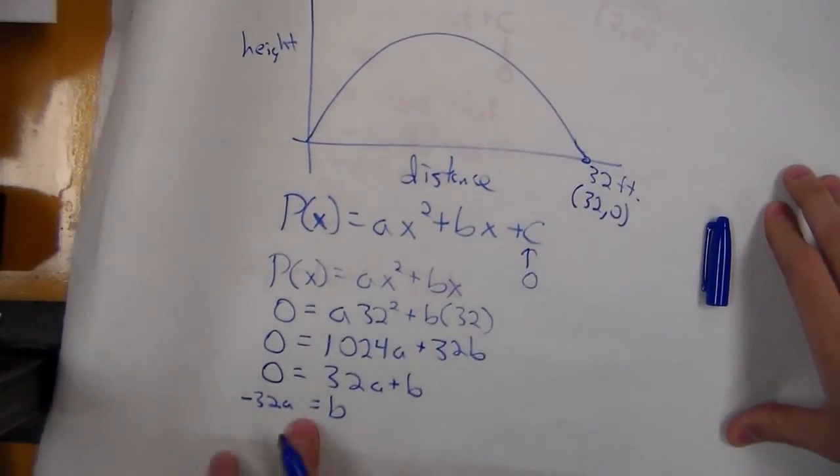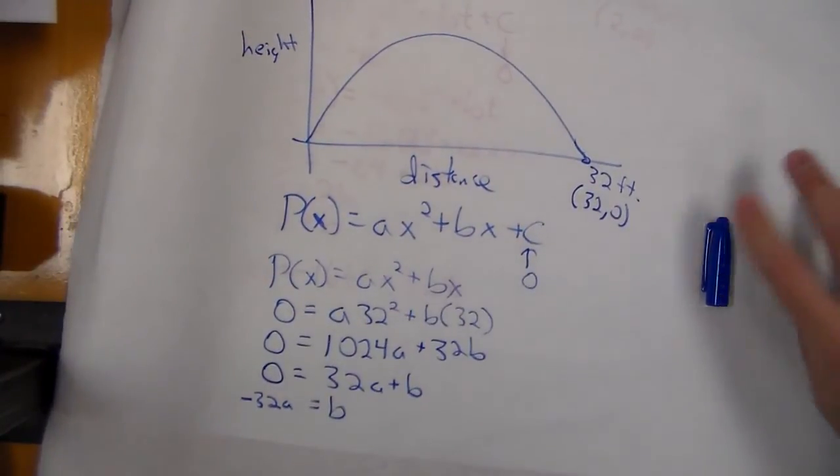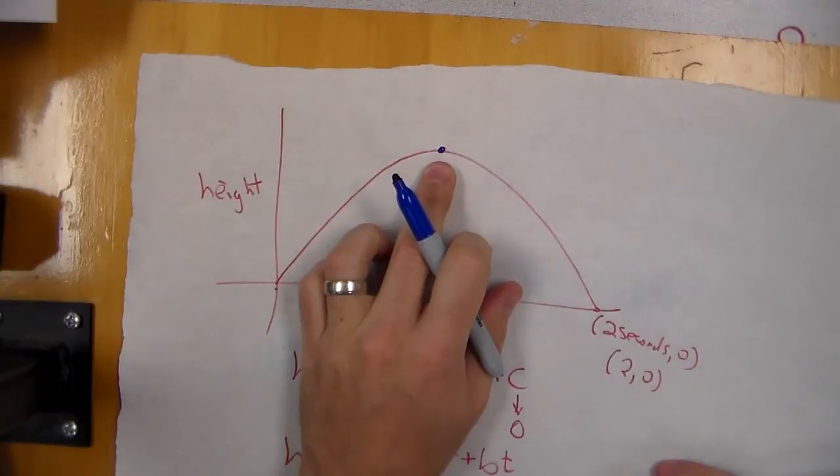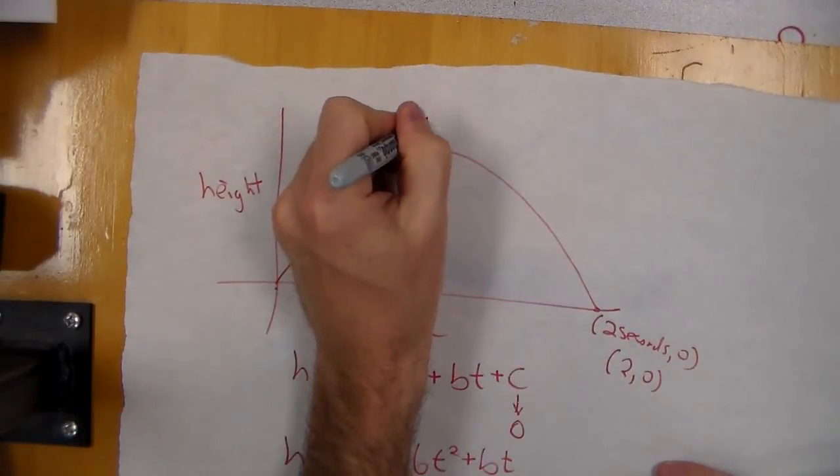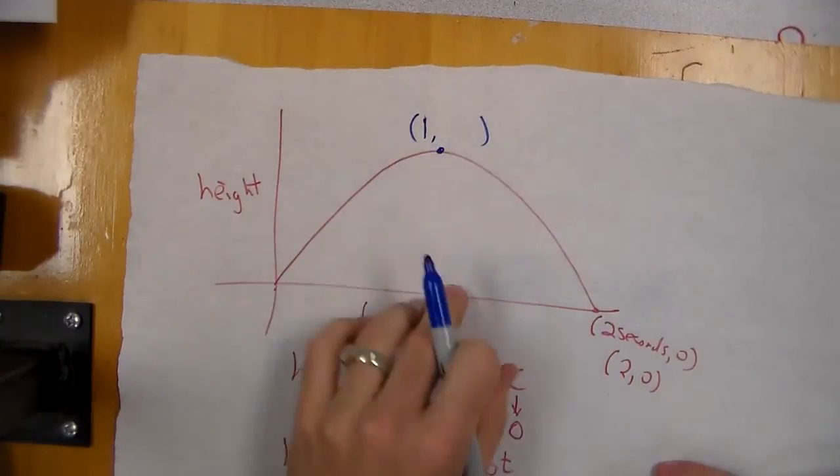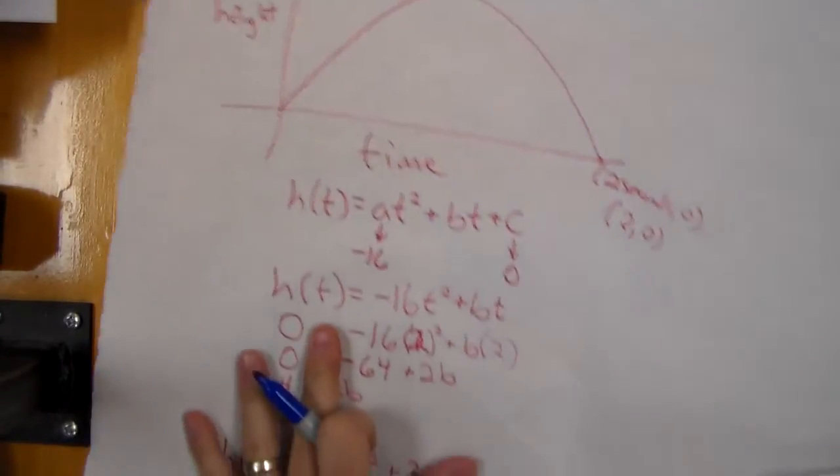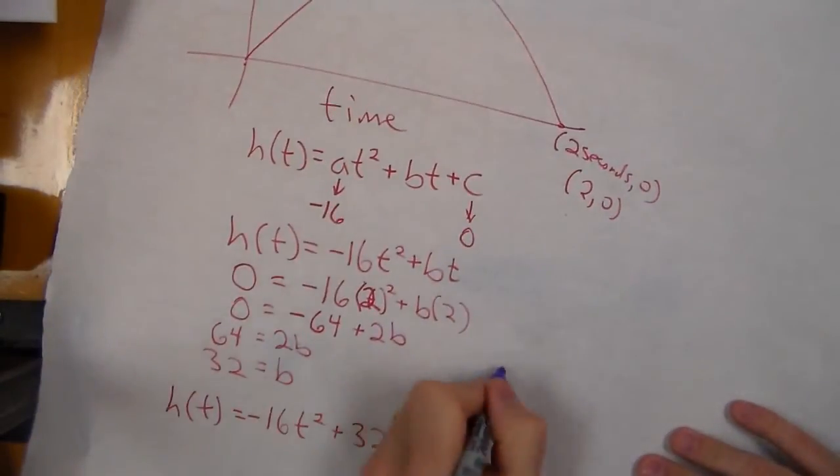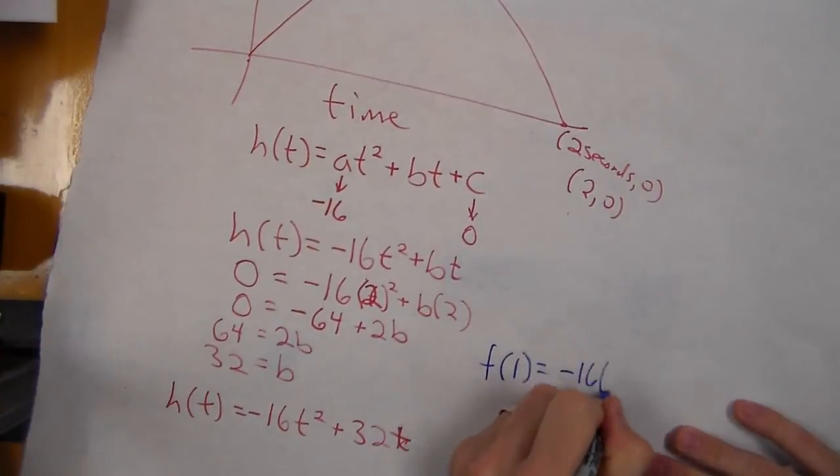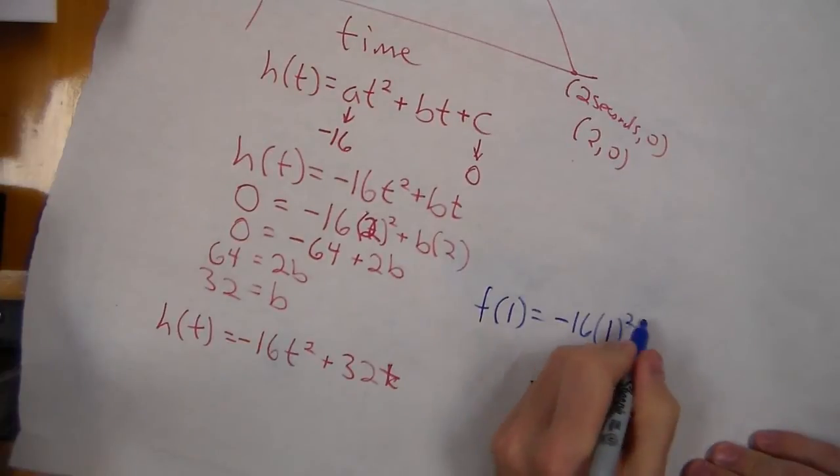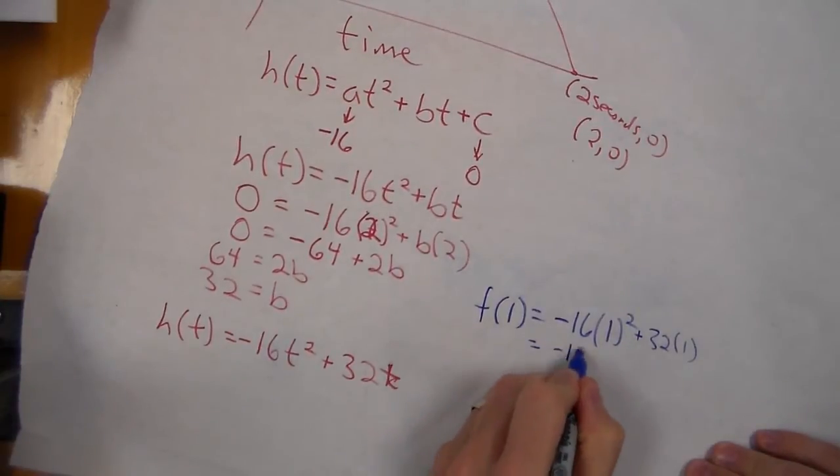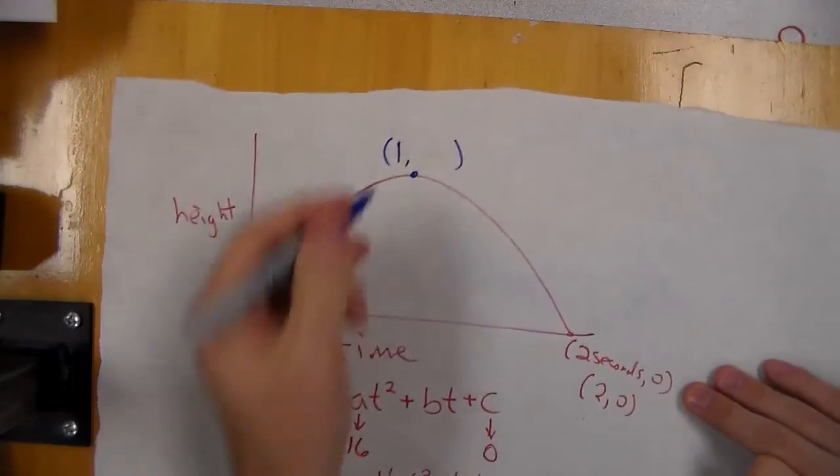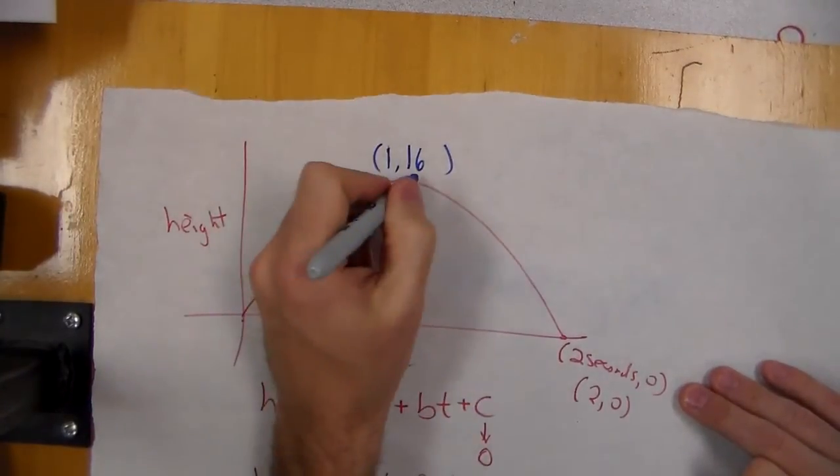Let's go back to our first graph. What was the vertex? I knew at one second, because that's half of the total time, it reached its maximum height. I can now plug one into my function to find what the height was. So h(1) = -16(1)² + 32(1) gives me -16 + 32, or 16 feet. So I reached a maximum height of 16 feet.